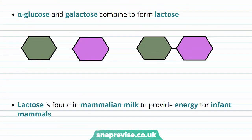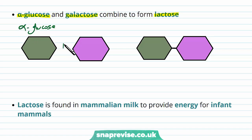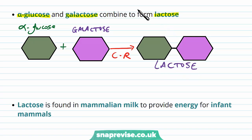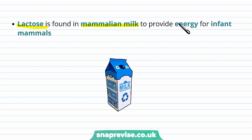A final example is where alpha glucose and the monomer galactose combine to form the disaccharide called lactose. You may have heard of some people being intolerant to lactose, where they cannot take this disaccharide in properly. Remember that glucose has alpha or beta isoforms, so always be specific. A condensation reaction between alpha glucose and galactose forms lactose — and a helpful memory tip is that galactose already has 'lactose' in its name. Lactose is found in the milk of mammals to provide energy for infant mammals.